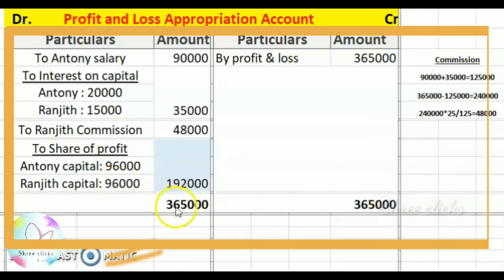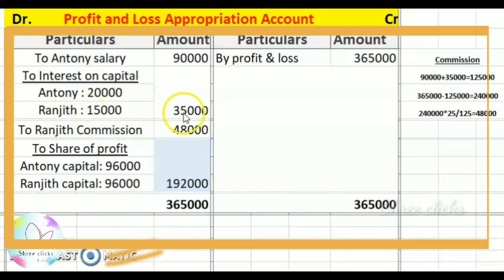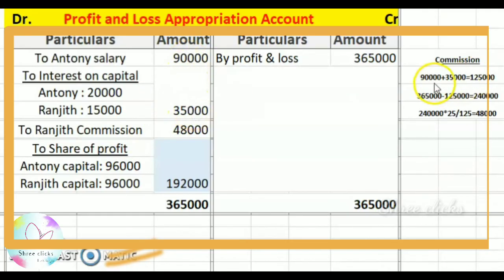On the debit side, the first entry is Anthony's salary: 90,000. Interest on capital at 5%: Anthony's capital is 4,00,000, so 5% is 20,000. Ranjit's capital is 3,00,000, so 5% is 15,000. Total interest on capital is 35,000. Anthony's salary 90,000 plus interest on capital 35,000 equals 1,25,000.